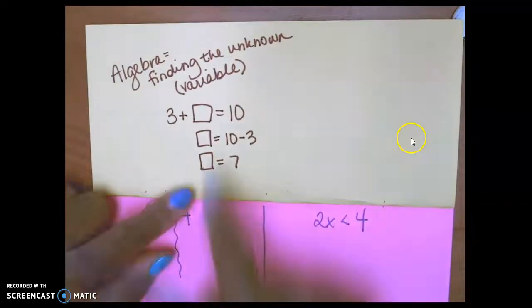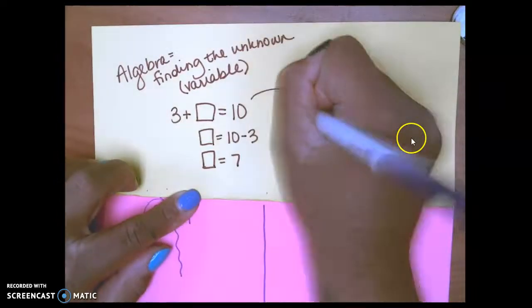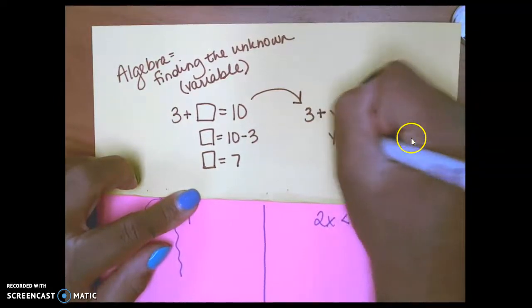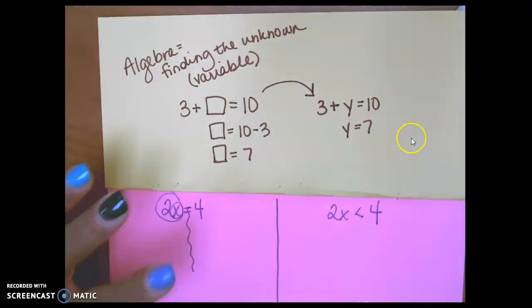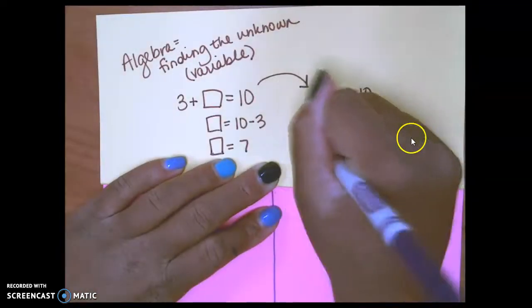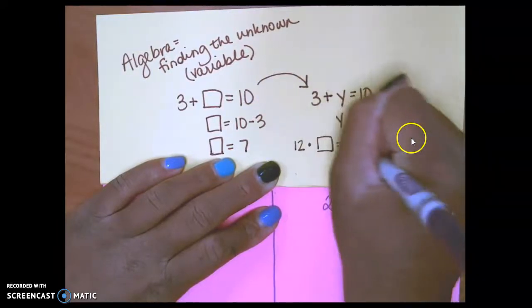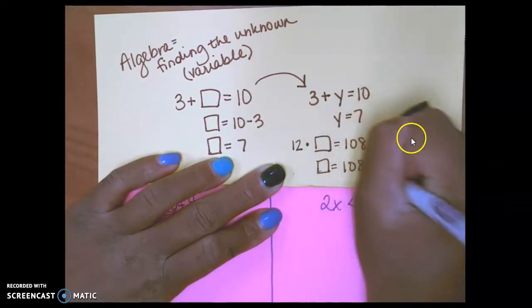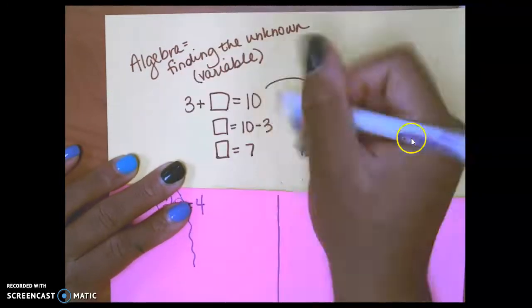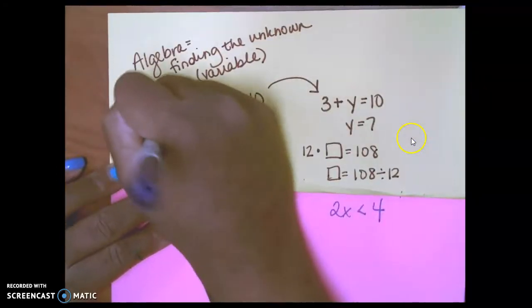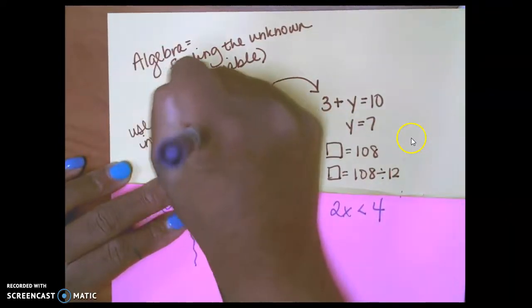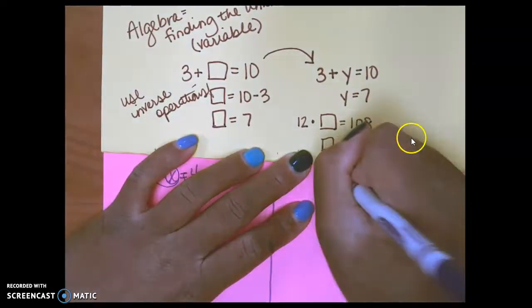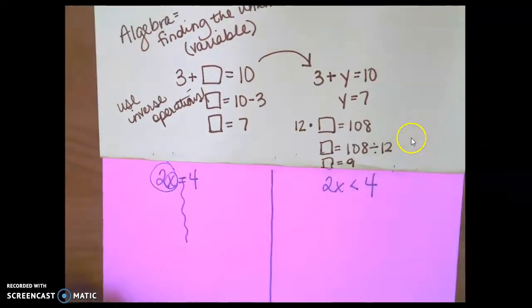We did that a number of different ways. Now, we are replacing the box with the variable 3 plus y equals 10. Y is equal to 7. Same thing with multiplication. 12 times box equals 108. Box equals 108 divided by 12. So, I have to use inverse operations. Then my box over here is equal to 9. So I'm doing the same thing here.